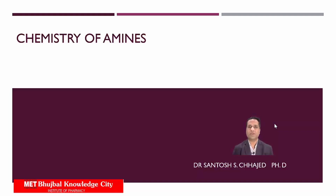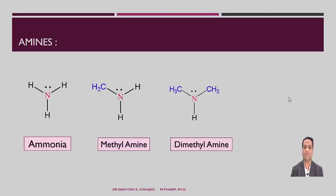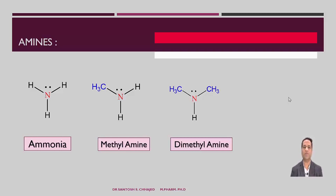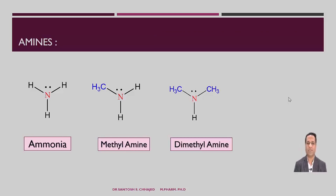Basically, amines are considered as a derivative of ammonia in which one or more hydrogens of ammonia are replaced with one or more alkyl or aryl groups. Two examples are shown on the screen: one is methylamine, in which one hydrogen of ammonia is replaced with a methyl group. In the second example, two hydrogens of ammonia are replaced with methyl groups.